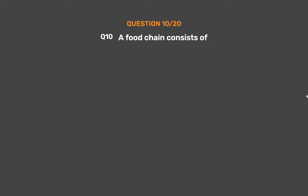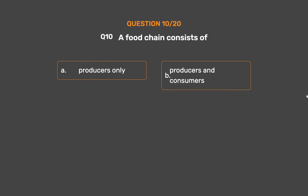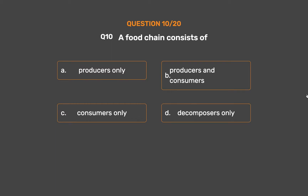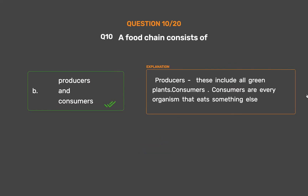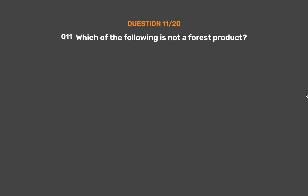Question number 10. A food chain consists of. Option A: Producers only. Option B: Producers and consumers. Option C: Consumers only. Option D: Decomposers only. The correct answer is Option B: Producers and consumers. Producers include all green plants. Consumers are every organism that eats something else.